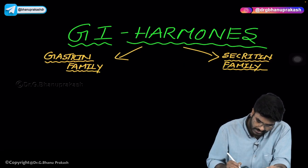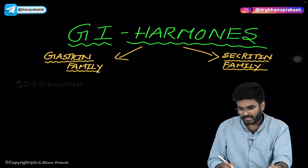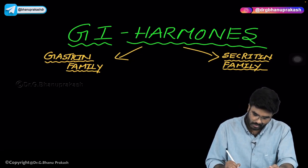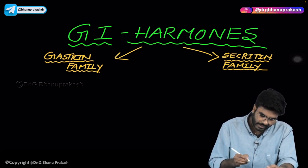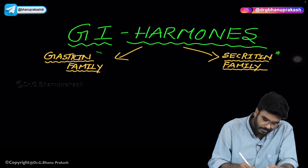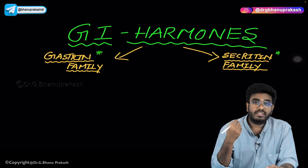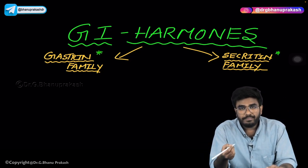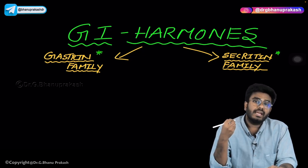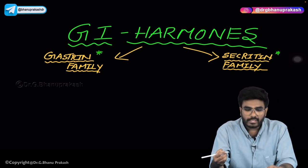Let's discuss some GI hormones. GI hormones are mainly classified into two types based on the type of receptor they use: the secretin family and the gastrin family.